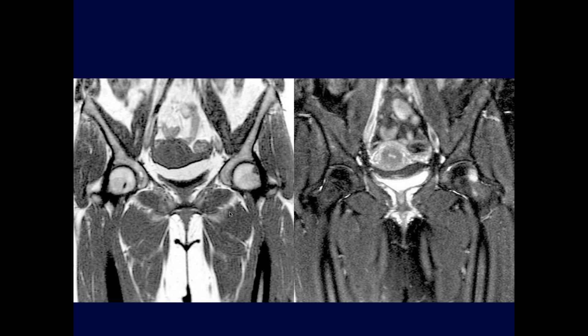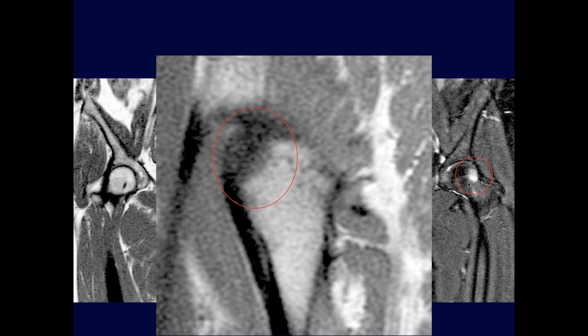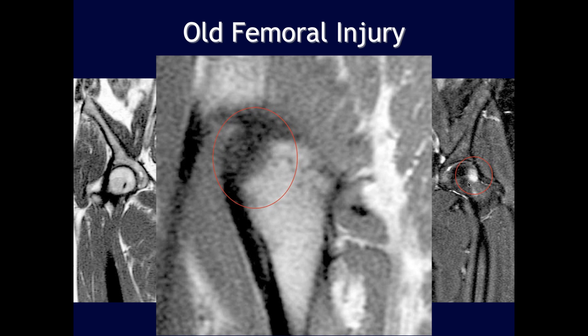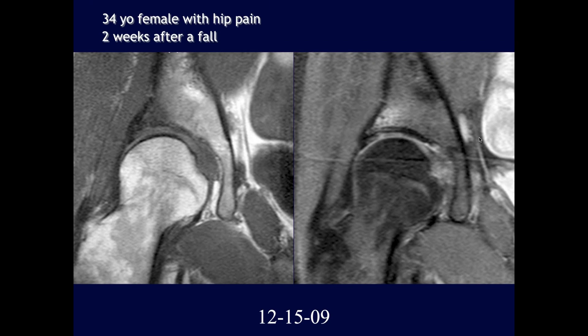Coronal images of bilateral hips show marrow edema along the left superior femoral head-neck junction. This may reflect an osseous contusion or remote injury, with possible cortical irregularity noted.